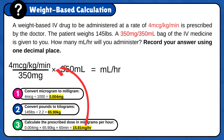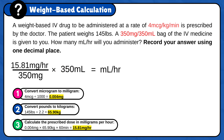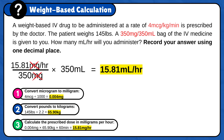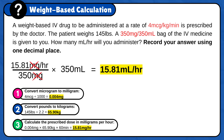Now plug the answer into the formula and calculate it: 15.81 milligrams per hour divided by 350 milligrams times 350 milliliters. Milligrams cancel out and the answer is 15.81 milliliters per hour. Round to one decimal place — since the hundredth digit is between 0 and 4, you round down, keeping the tenth place the same. The final answer is 15.8 milliliters per hour.